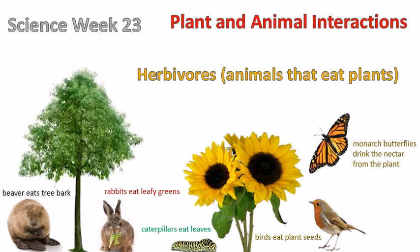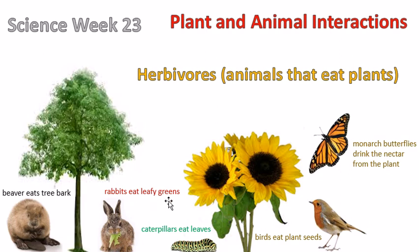Next, we're going to talk about herbivores — animals that eat plants. Here in this picture we see some animals and the plants that they eat. We have a beaver here which eats tree bark; he can enjoy the tasty, delicious tree bark from day to day to survive. Here we have a rabbit which eats leafy greens — he likes to eat celery, lettuce, and other leafy greens, perhaps cabbage and sometimes even spinach.